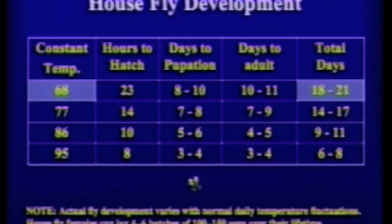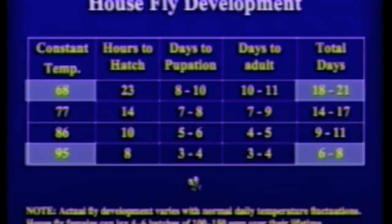When we look at house fly development, this becomes very important when we start talking about control using cultural tactics, manure and sanitation, and manure removal. At 68 degrees, it takes approximately 18 to 21 days for that fly to go from an egg to an adult. At 95 degrees, we've actually reduced that time from egg to adult by two-thirds — only six to eight days during the warm summer months. Seven days is something I want you to keep in mind, and it's something we're going to talk about a lot more throughout our presentation today.